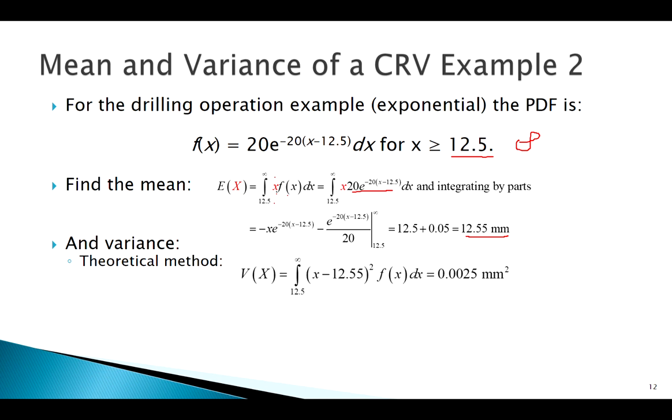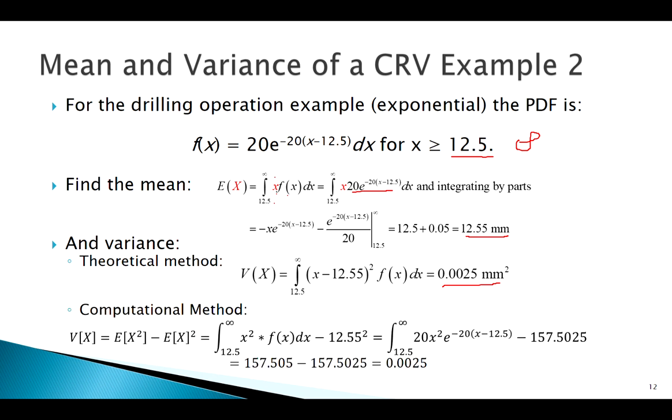Find the variance. Let's compare the theoretical method. If you do it that way, you get this. Computationally, here we go. I use 12.55, plug it in there, that squared, 157. Do this integral here, you'd have to integrate by parts, and you get this guy minus this guy, leaves me with this, which should match up with what you find doing it the other way as well.